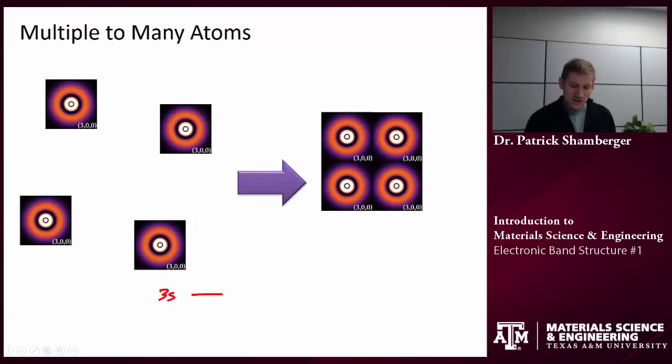Again, we start off with 3s orbitals, and we have four of them because we're combining four different atoms. When I bring those atoms together, when they start to interact, again, I'm going to have energy level splitting. And so now I can have four potential orbitals that electrons can fill.